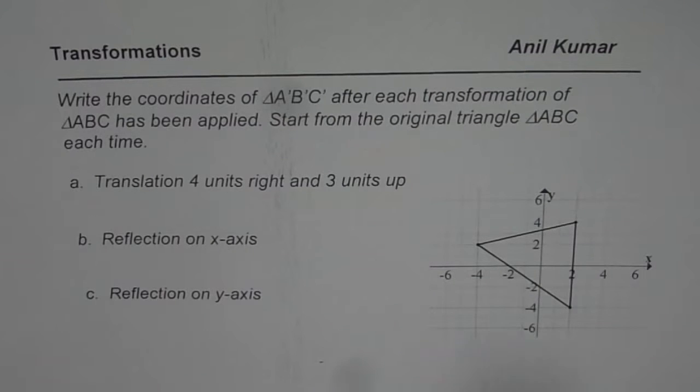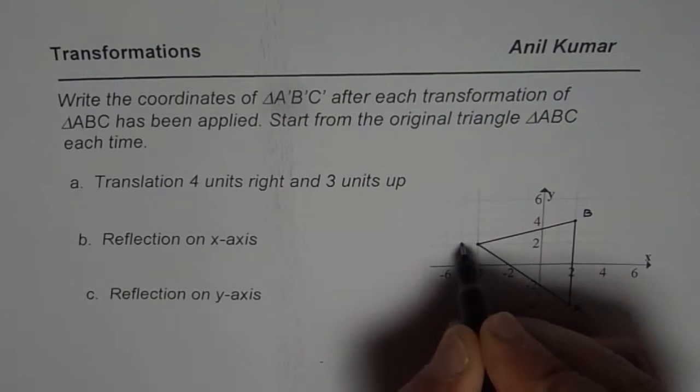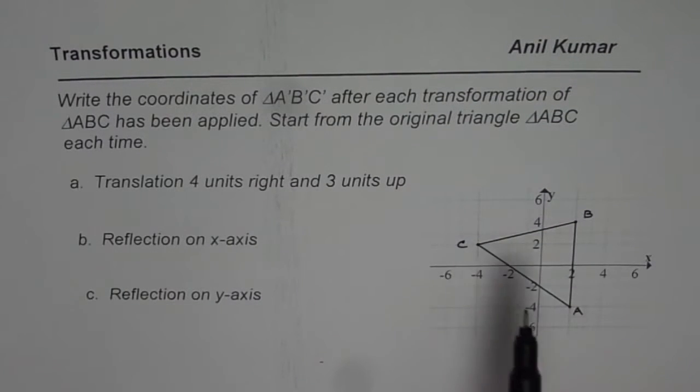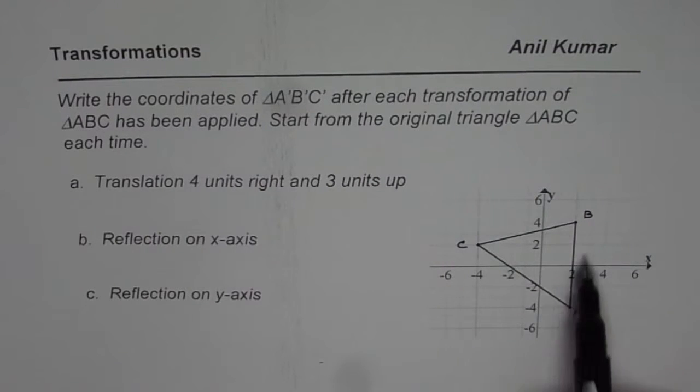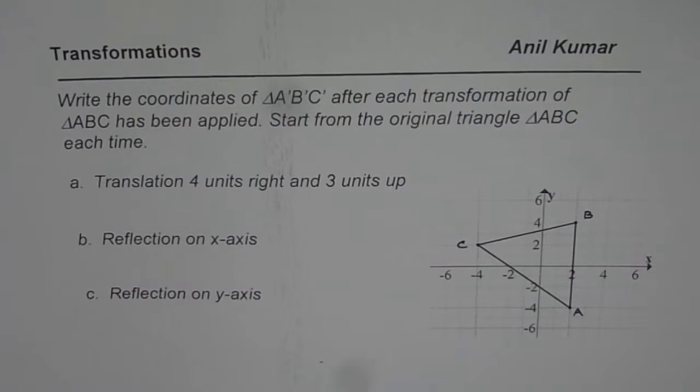Triangle ABC is given to us. Start from the original triangle ABC each time. So starting from this triangle, you have to write down coordinates of new triangle A'B'C', and these are your different kinds of transformation.